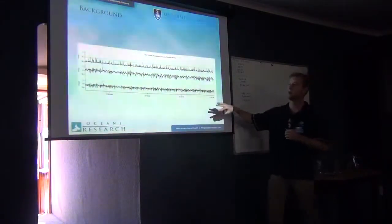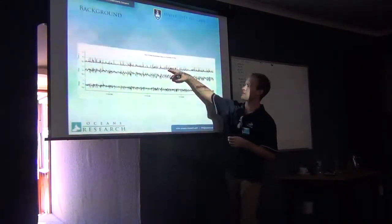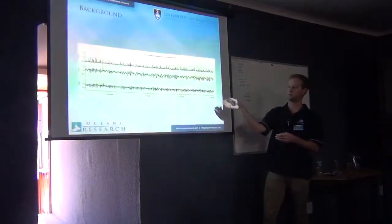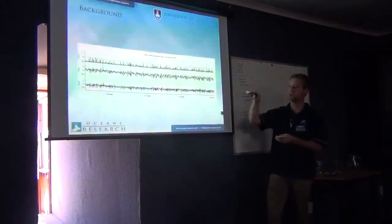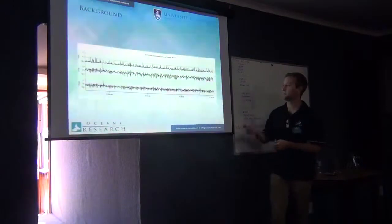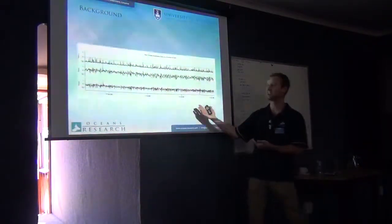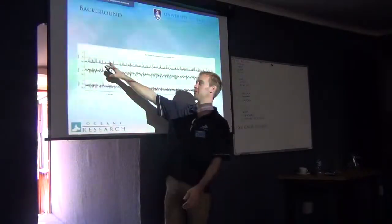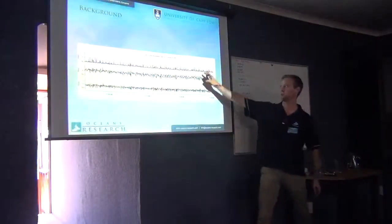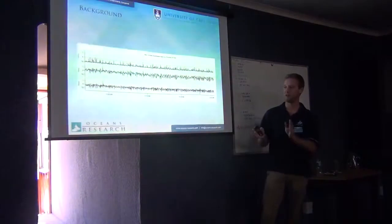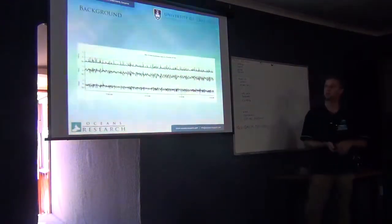This is a triaxial accelerometer. So we've got acceleration in the heave axis that would be up and down. The sway axis, left and right. And then the surge axis, forward and back. You can see here, though, that it's not very clear what's going on. It doesn't say, oh, right here it was swimming steadily, here it was burst swimming. There's a bit of manipulating the data that needs to be done and then some interpretation.